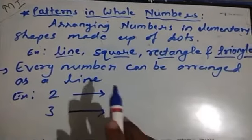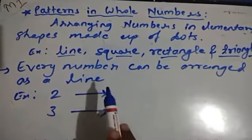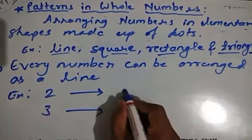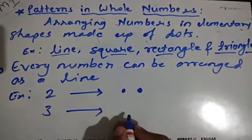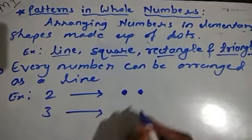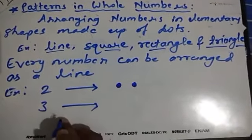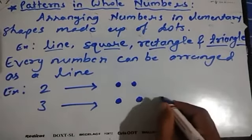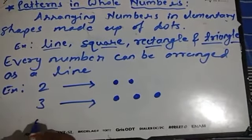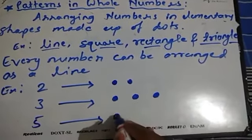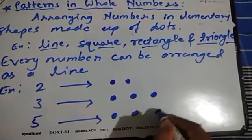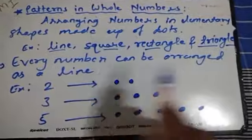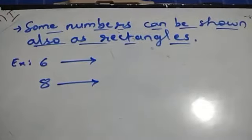First, every number can be arranged as a line. For example, 2 can be arranged as a line with dots. Similarly, 3 dots can form a line, and 5 dots also form a line: 1, 2, 3, 4, 5. In this way, every number can be arranged as a line.